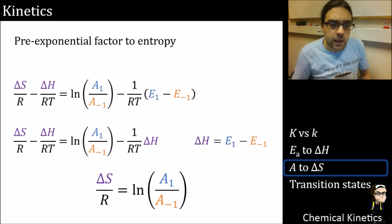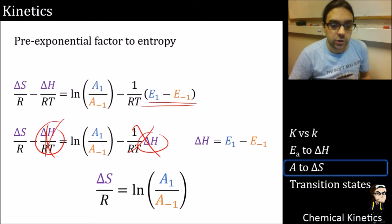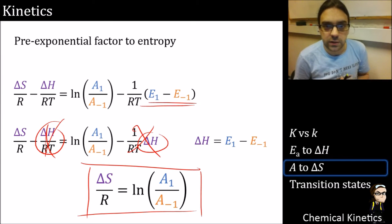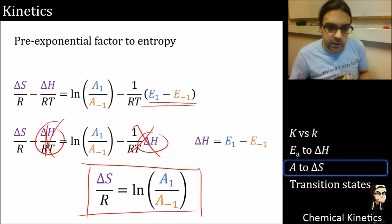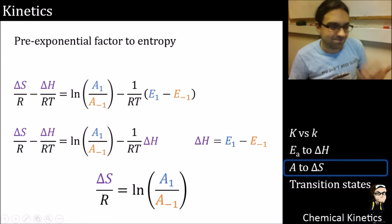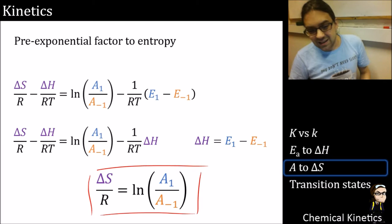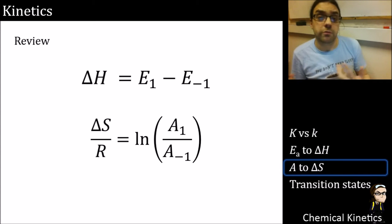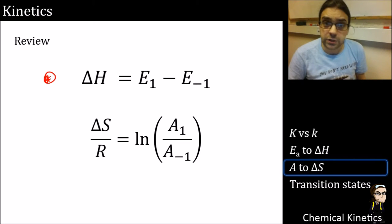To make this a proper proof rather than just noting the similarity, we substitute log K for delta S and delta H using the full expression, then replace with delta H. The delta H over RT terms cancel on both sides, and we end up with: delta S over R equals the log of the ratio of the pre-exponential factors.